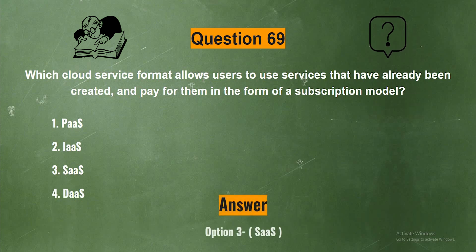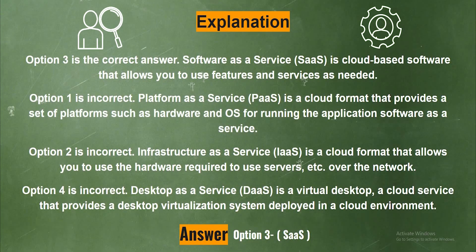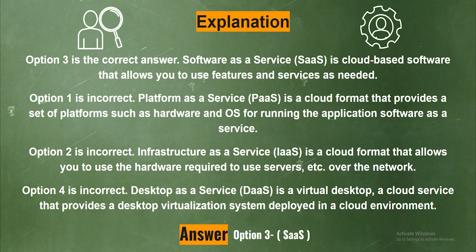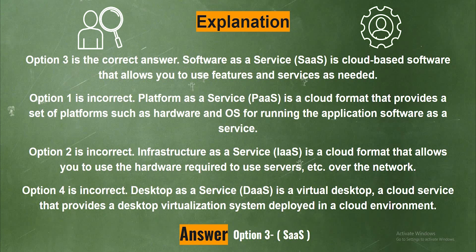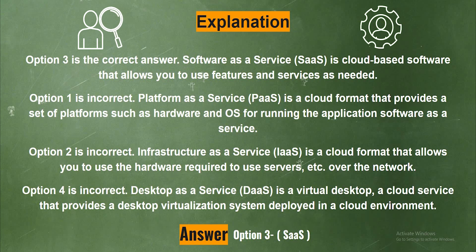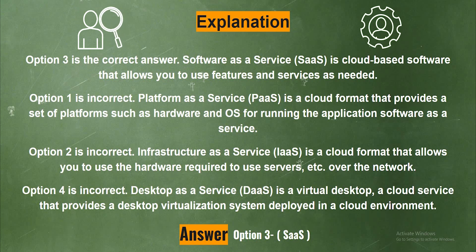The correct answer is Option 3, SaaS. Software-as-a-Service is cloud-based software that allows you to use features and services as needed. Option 1 is incorrect — Platform-as-a-Service provides a set of platforms such as hardware and OS for running application software. Option 2 is incorrect — Infrastructure-as-a-Service allows you to use the hardware required for servers over the network. Option 4 is incorrect — Desktop-as-a-Service is a virtual desktop cloud service that provides a desktop virtualization system deployed in a cloud environment.